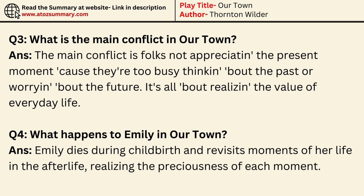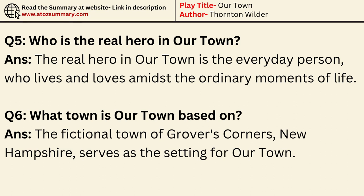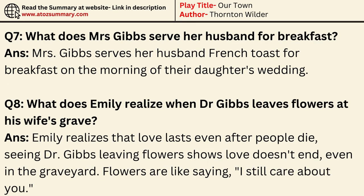What happens to Emily in Our Town? Emily dies during childbirth and revisits moments of her life in the afterlife, realizing the preciousness of each moment. Who is the real hero in Our Town? The real hero is the everyday person who lives and loves amidst the ordinary moments of life. What town is Our Town based on? The fictional town of Grover's Corners, New Hampshire, serves as the setting. What does Mrs. Gibbs serve her husband for breakfast? Mrs. Gibbs serves her husband French toast for breakfast on the morning of their daughter's wedding. What does Emily realize when Dr. Gibbs leaves flowers at his wife's grave? Emily realizes that love lasts even after people die — seeing Dr. Gibbs leaving flowers shows love doesn't end, even in the graveyard. Flowers are like saying, I still care about you.